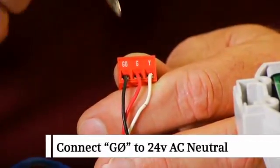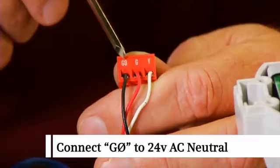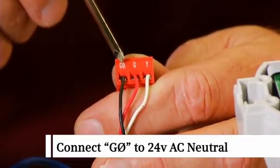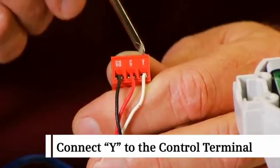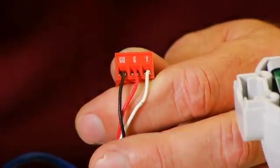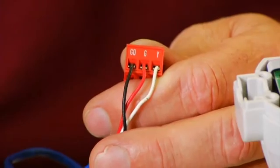Connect G0 to the 24 volt AC neutral terminal, and connect Y to the 0 to 10 VDC control terminal. Plug the terminal connector into the pins in the SSC actuator.